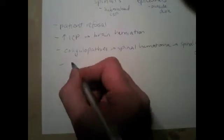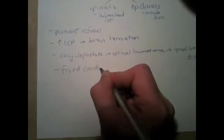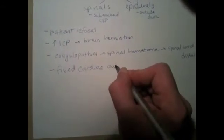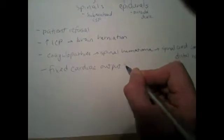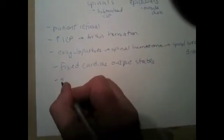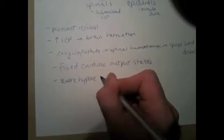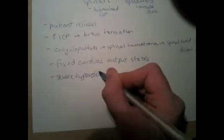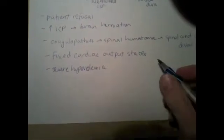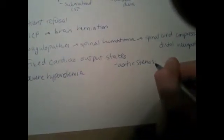We can talk about fixed cardiac output states, and also severe hypovolemia. Fixed cardiac output states include things like aortic stenosis, mitral stenosis, and HOCM (hypertrophic obstructive cardiomyopathy).